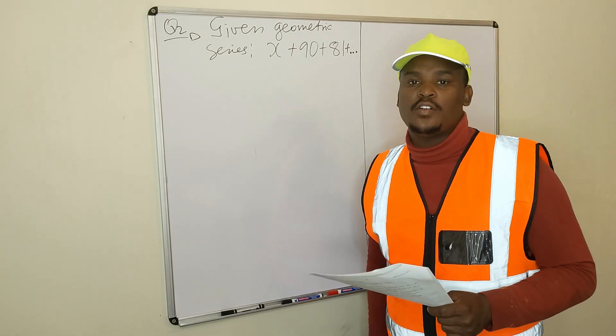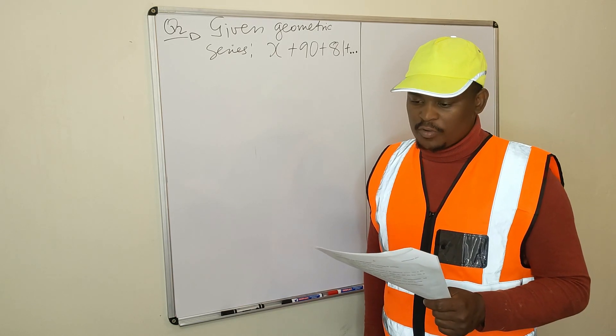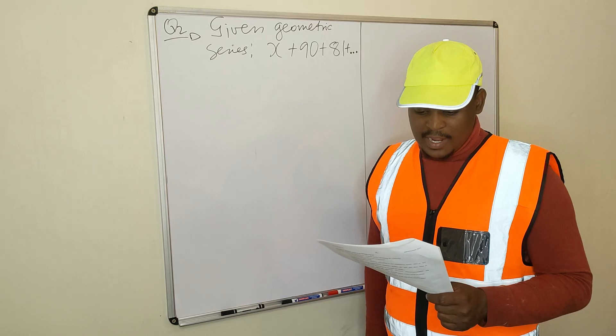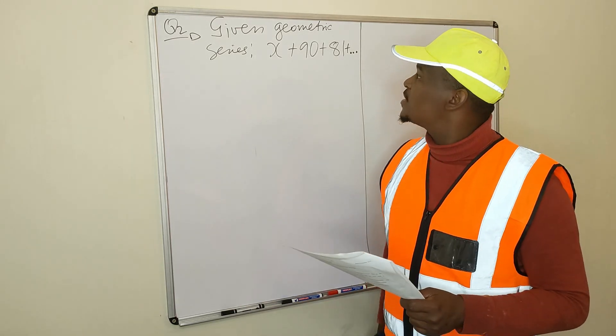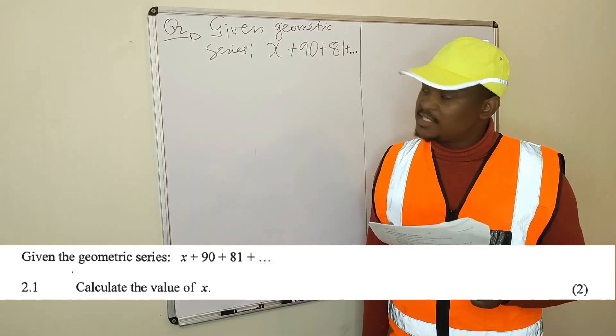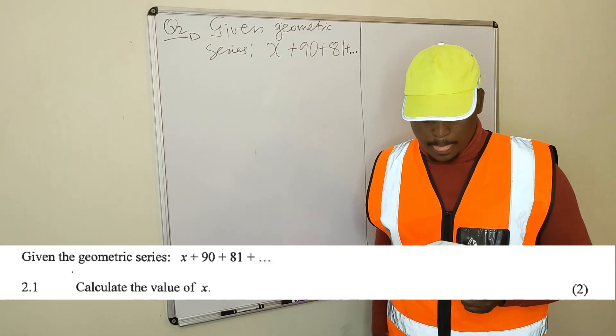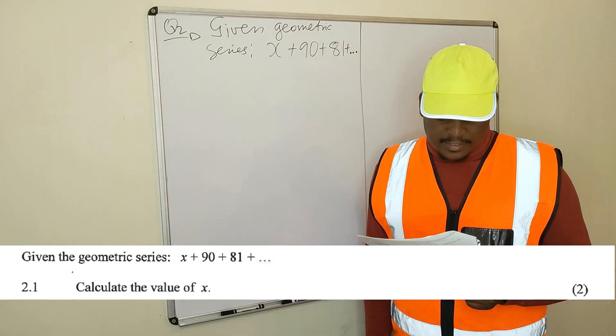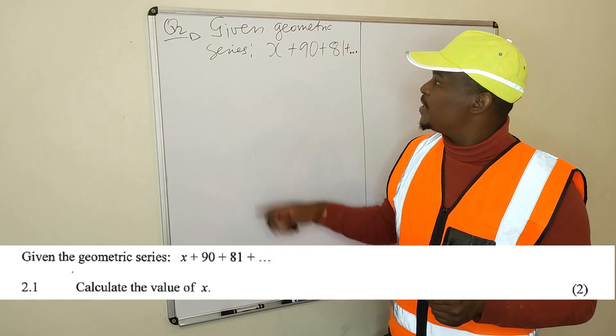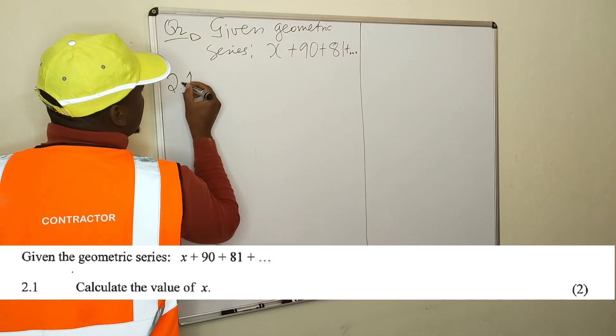Hello, thank you for watching this video. On this video I'll be doing question 2 of November 2021 question paper mathematics paper 1. Question 2 we have the geometric series as you can see here. Given the geometric series which is x plus 90 plus 81 going forward, and then they are asking you to answer these questions that follow based on this series.